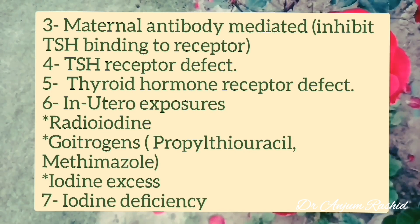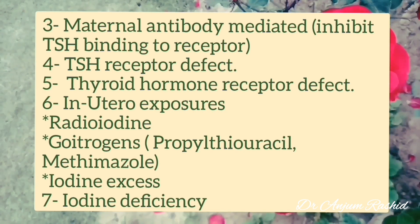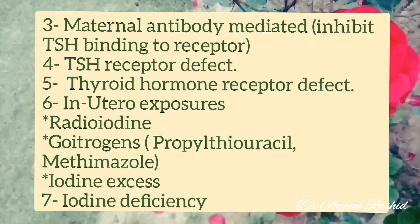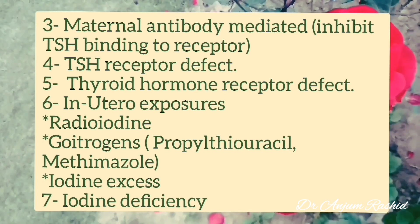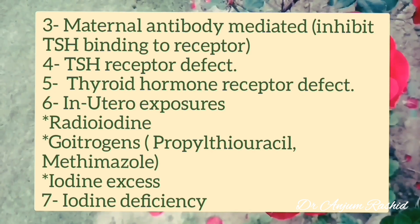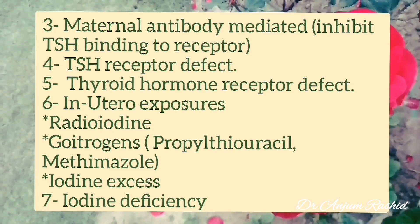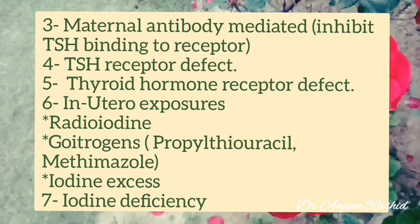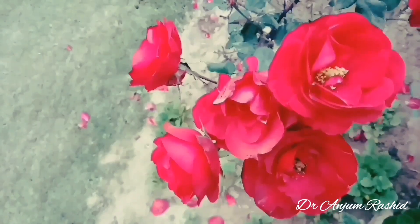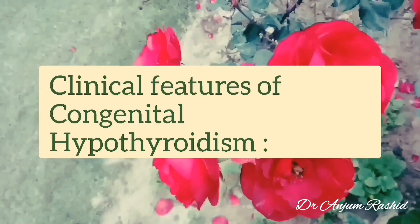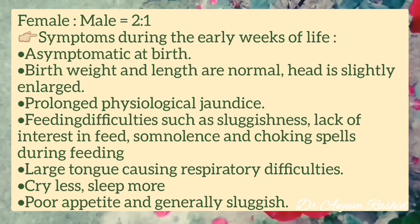Congenital hypothyroidism may be due to maternal antibodies which inhibit TSH binding to the receptor, TSH receptor defect, or thyroid hormone receptor defect. In utero exposure to radioiodine or goitrogens — including propylthiouracil or methimazole — may also cause it, as can iodine excess or iodine deficiency.